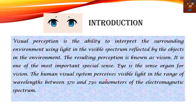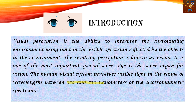The human visual system perceives visible light in the range of wavelengths between 370 to 730 nanometers. Please remember this — 370 to 730 nanometers is the range of wavelength that our visual system can perceive.